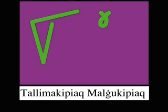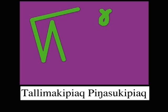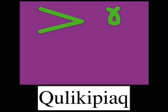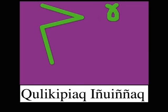The 140th number is talimakipiak malaguqi biak, five times 20 plus two times 20. The 160th number is talimakipiak pingasuki biak, five times 20 plus three times 20. The 180th number is talimakipiak sisamakipiak, five times 20 plus four times 20. The 200th number is kulikipiak, shown as 10 times 20. The 220th number is shown and said as 10 times 20 plus 20.